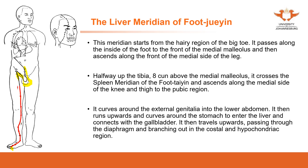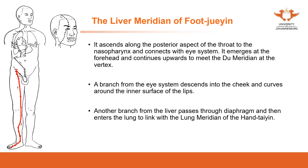The liver meridian travels outward, passes through the diaphragm, branches out into the costal and hypochondriac region — that's why if someone suffers from hypochondriac discomfort or chest discomfort, we use treatment towards the liver meridian, since the liver meridian is distributed to this area. It then ascends along the posterior aspects to the nasopharynx and connects with the eye system, with one branch going up to the eye.